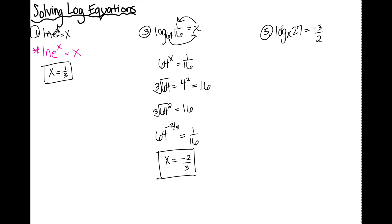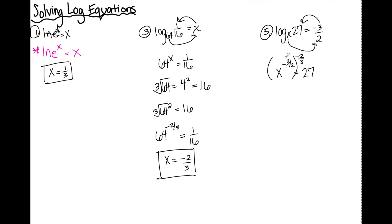Number five: log base x of 27 is equal to negative three halves. I'm going to write this in exponential form as well. I start at the base of the log and hop over the equal sign, so x to the negative three halves equals 27. I have a variable raised to an exponent and I need to get the variable to have an exponent of one, so I'm going to raise this to the reciprocal power. When I have a power to a power, I multiply those exponents — negative three halves times negative two-thirds gives positive one, leaving x to the one on the left side.